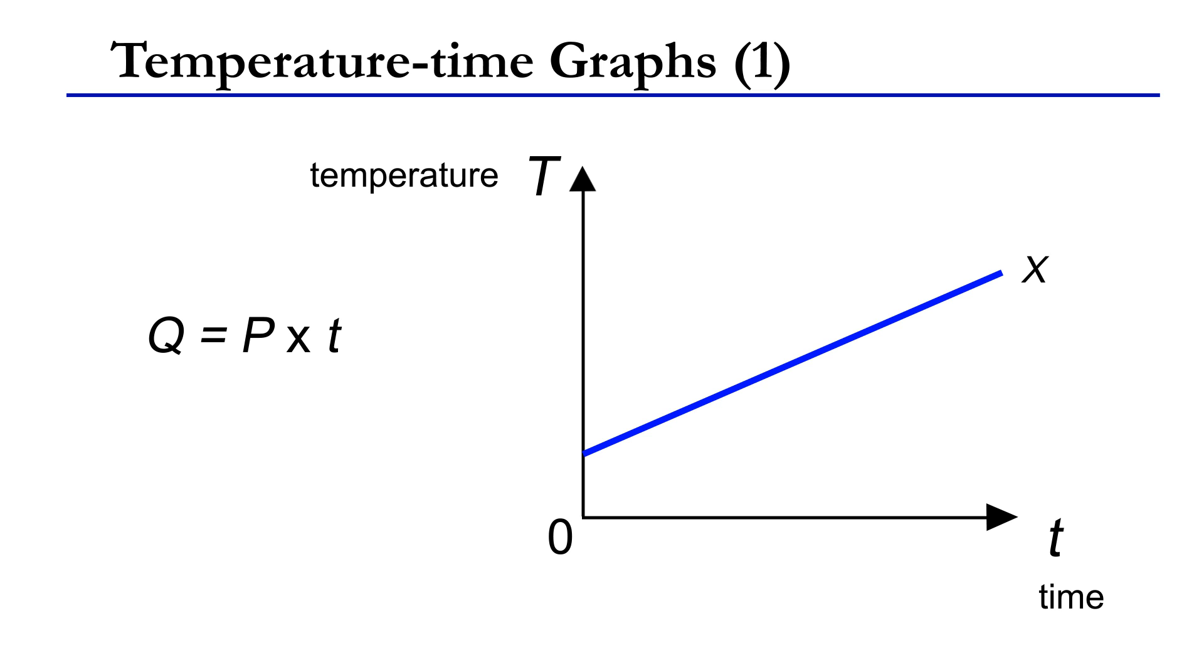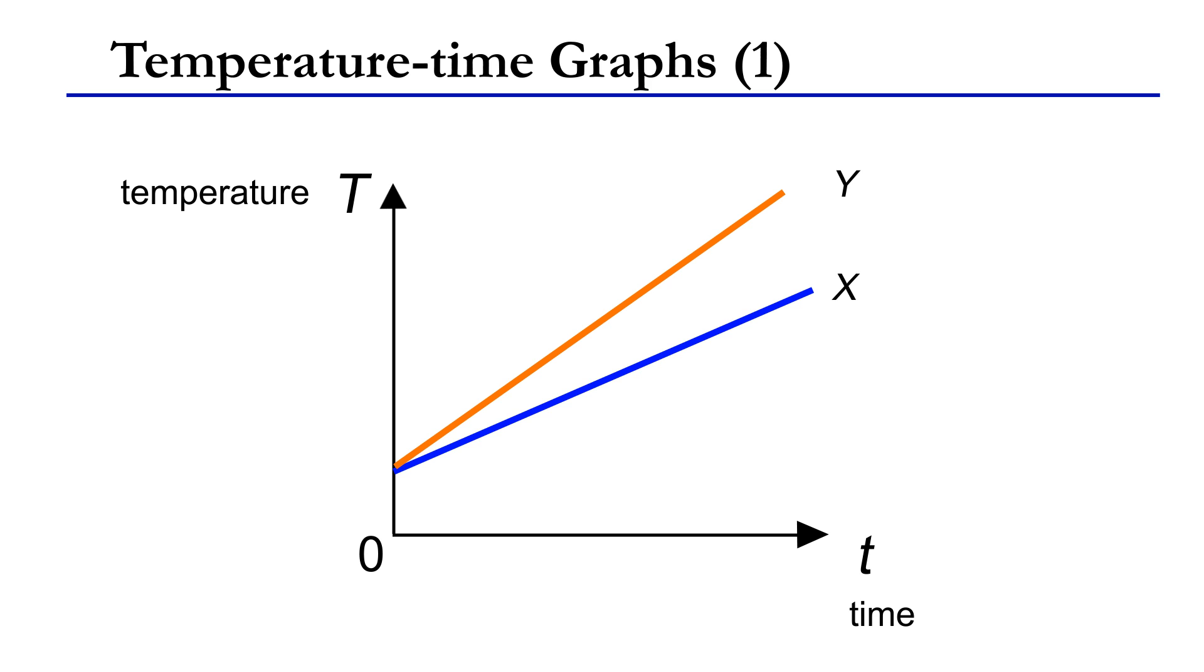Now, let's repeat the experiment with another object Y using the same power. We may get another Tt graph. How do you compare the heat capacity of X to that of Y? We can view the problem in two ways.